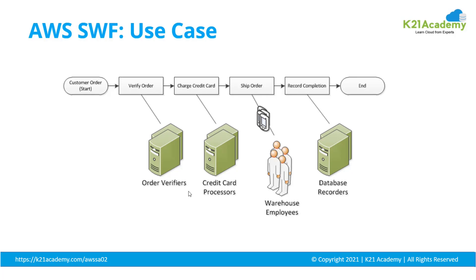A good use case example is order fulfillment from start to finish. A customer places an order, it verifies the order is correct, checks inventory, charges the credit card, prepares and ships the order, and records the completion. All these are different workflows. This is an example of a serial or sequential workflow — a task completes one after another, so the order is only shipped after the credit card is charged. Or you can have workflows where multiple processes run in parallel.